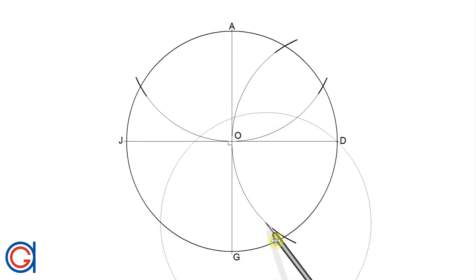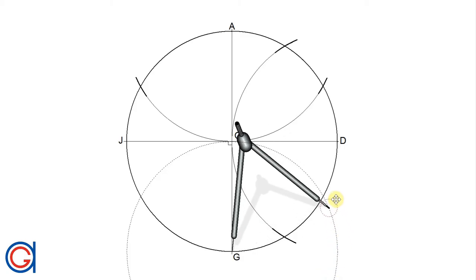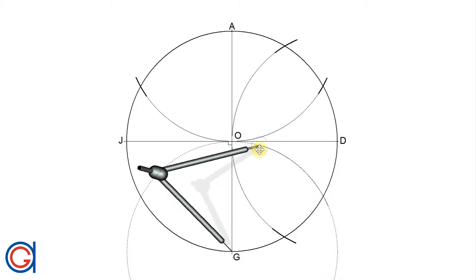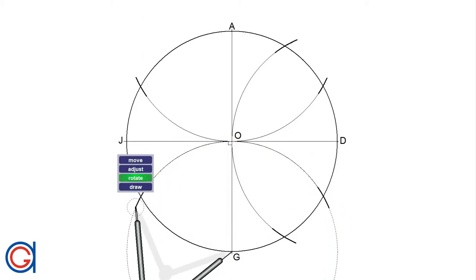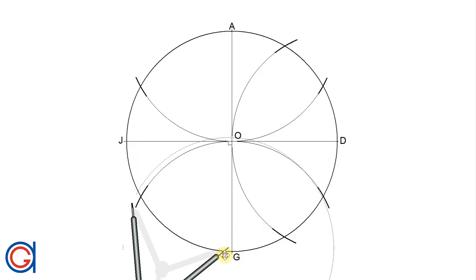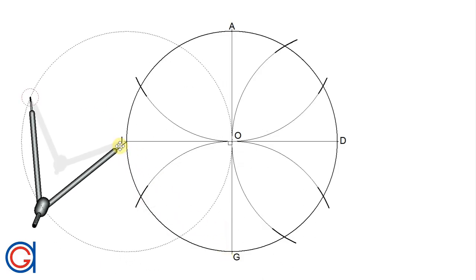And again setting our compass on point G we scribe the third semicircle. And finally setting our compass on point J we scribe our fourth semicircle which cuts the circumference at two more points.